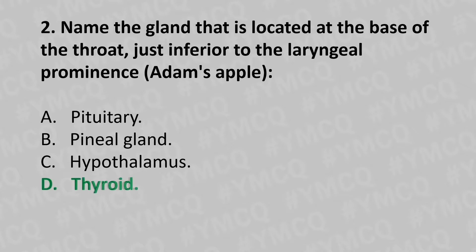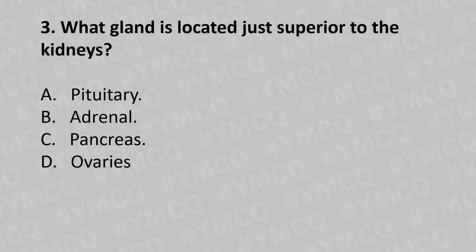Moving to our third question. What gland is located just superior to the kidney? Option A: pituitary. Option B: adrenal. Option C: pancreas. Option D: ovaries. And the answer is Option B: adrenal.